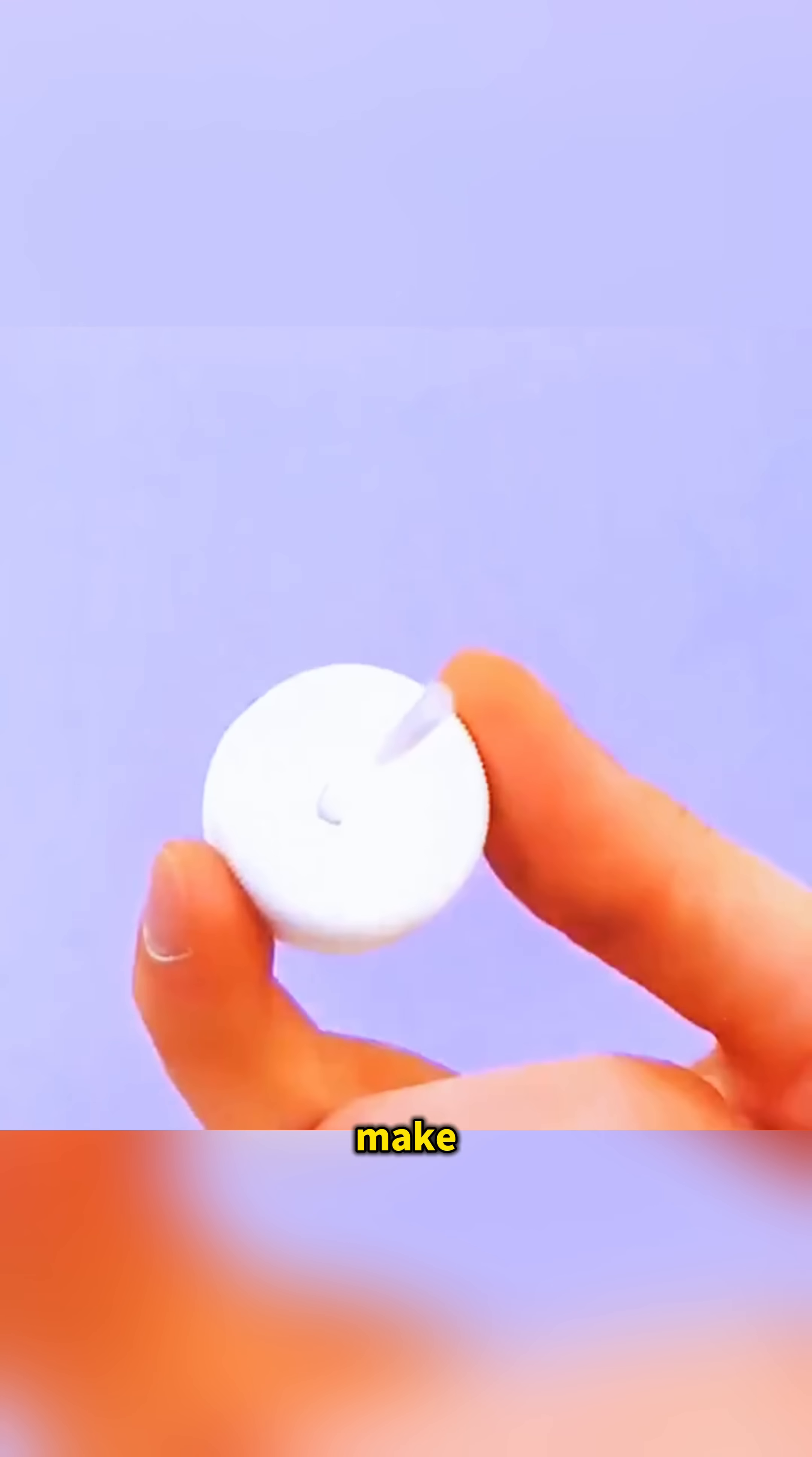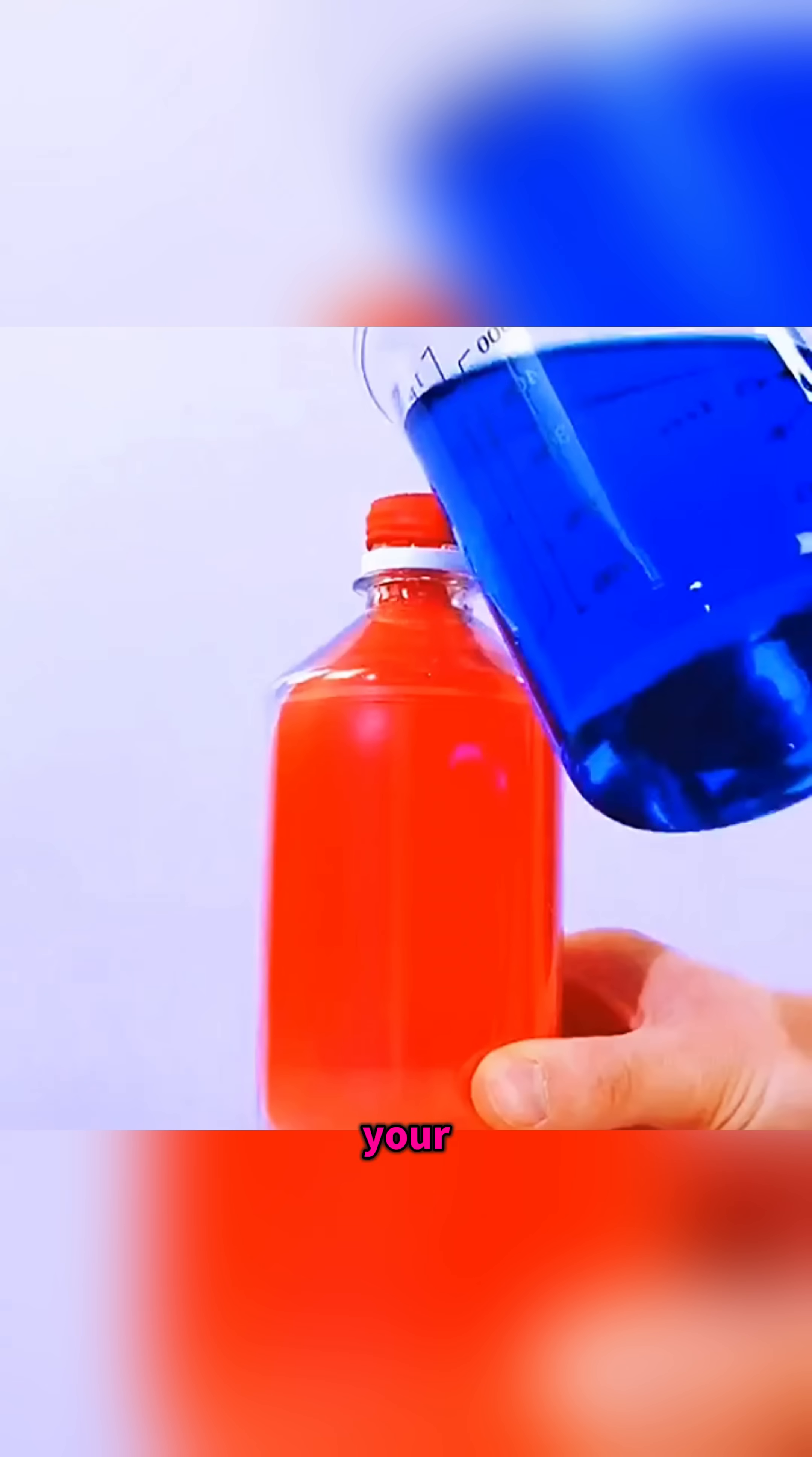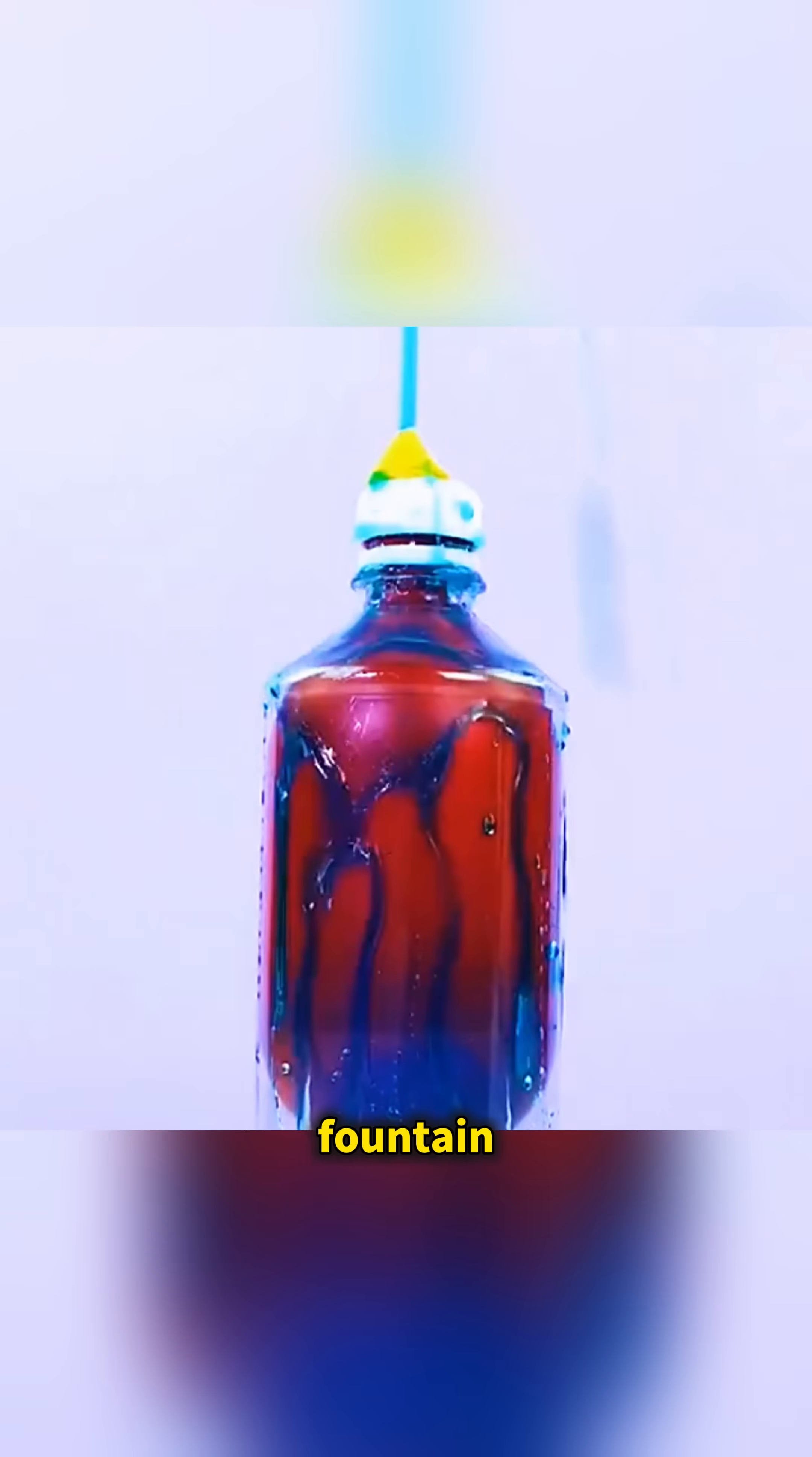Prepare a plastic bottle, poke a small hole near the bottom, insert a balloon inside from the mouth, make a hole in the cap, insert a straw, and seal it tightly. Inflate the balloon, block the lower hole with your finger, pour in prepared colored liquid, release your finger, and the liquid instantly bursts out like a beautiful fountain.